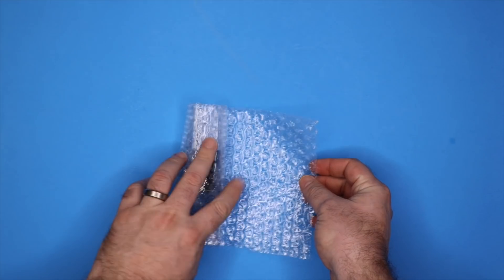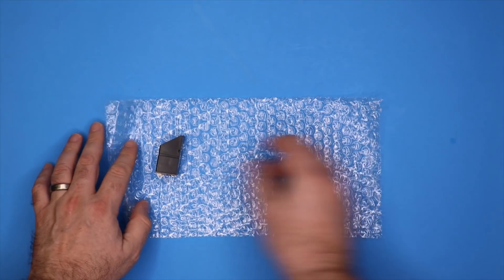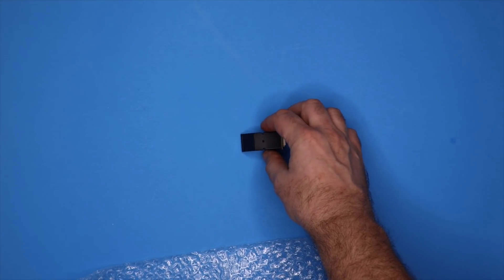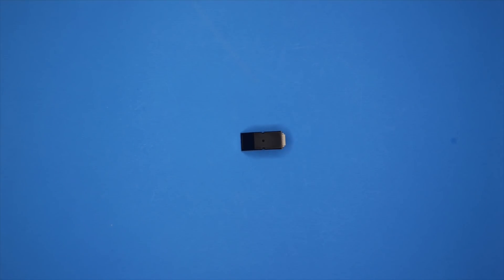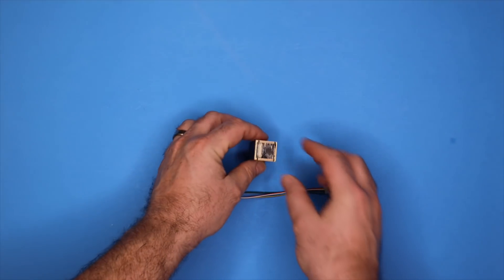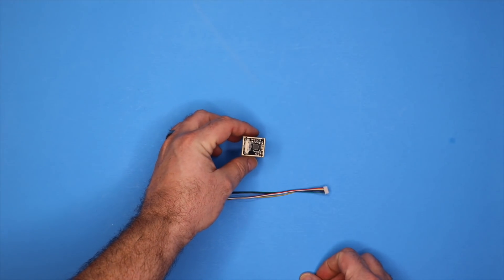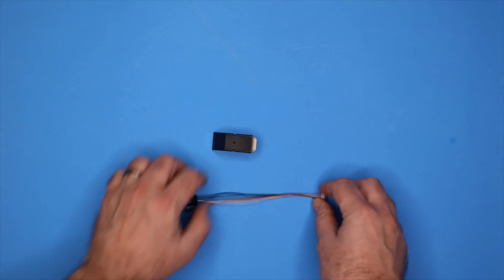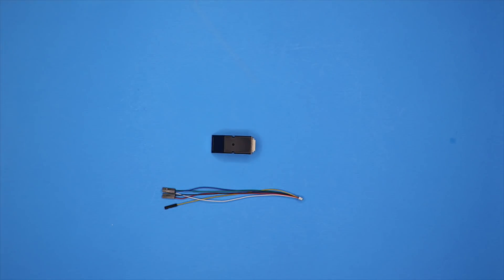First, in the box here we have wrapped up in bubble wrap a fingerprint reader module. There is a wiring harness that goes with that module here and to interface with that we have an Arduino Nano microcontroller board.